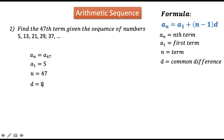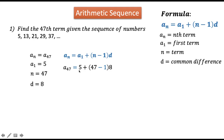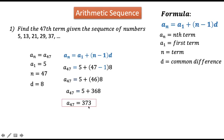Step 2: write the formula and substitute the given. So a sub n is a sub 47, a sub 1 is replaced by 5, n is replaced by 47, and d is replaced by 8. Then let us solve algebraically using the order of operations, starting inside the parentheses: 47 minus 1 is 46, then multiply by 8 to get 368, plus 5 gives 373. That is a sub 47, or the 47th term of this sequence.